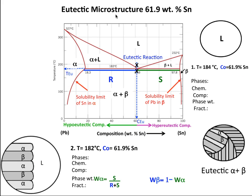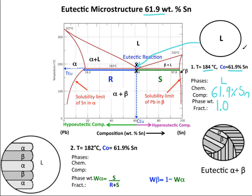Now we'll look at what happens at the eutectic composition, which for lead and tin is 61.9% tin. We are 1 degree above the eutectic temperature at the eutectic composition, putting us here in the liquid region. Phases present as liquid, the chemical composition is the eutectic composition, and the phase weight fraction is 1.0. Notice the liquid looks the same as the other two liquids — the only difference is it's at the eutectic composition.